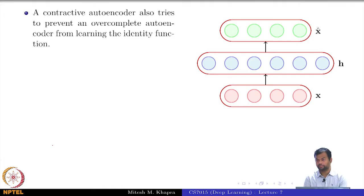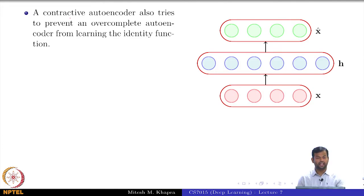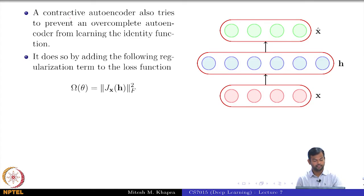It again tries to prevent an over-complete autoencoder or even an under-complete autoencoder from learning the identity function. It does not allow you to simply copy the inputs to the outputs, and it does so by adding the following regularization term to the loss function.